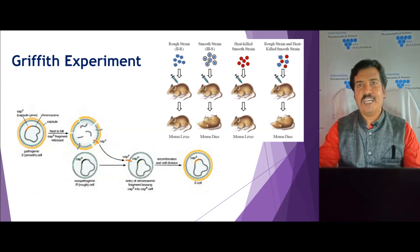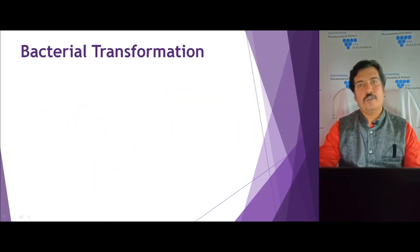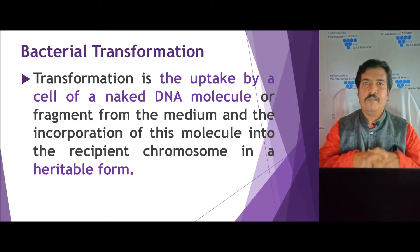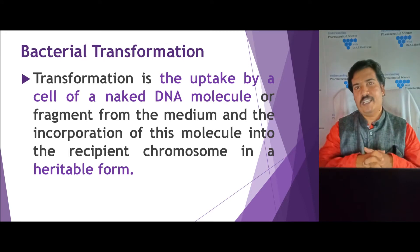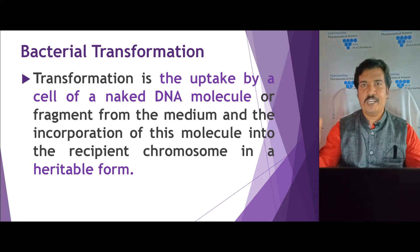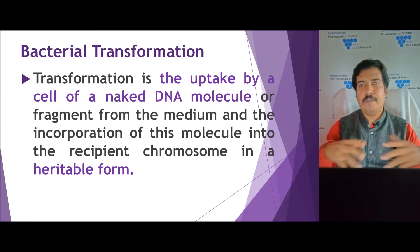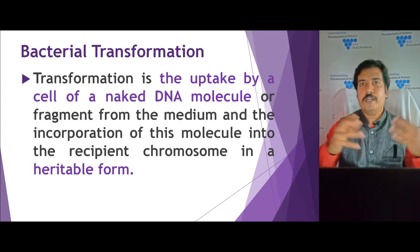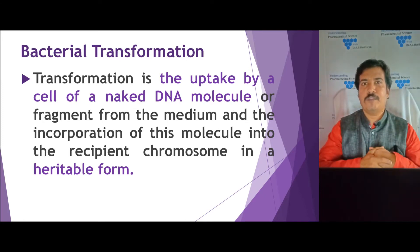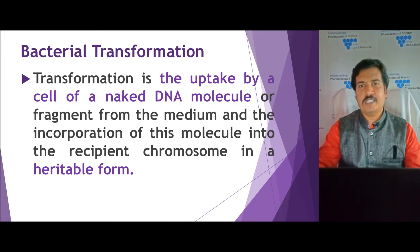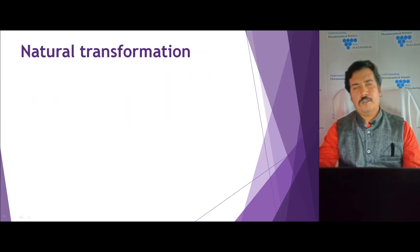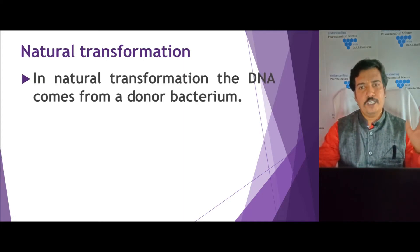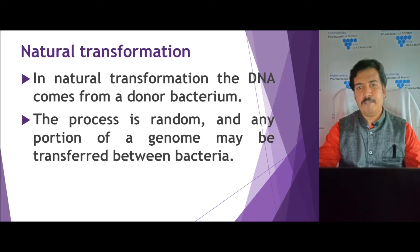Bacterial transformation is a process in which a competent cell takes up foreign DNA — a naked DNA or a fragment of naked DNA — present outside the cell in the medium, and incorporates this molecule into the recipient chromosome in a heritable form. Natural transformation between the medium and a competent bacterial cell is generally random in nature, and a part of the genome is transferred and integrated.